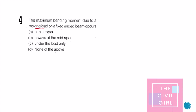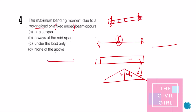Next question: the maximum bending moment due to a moving load on a fixed-end beam occurs due to what? For a fixed-end beam, there are already moments present at the fixed ends. If the moving load is placed near the support, additional moment is produced at the support, making it the location of maximum bending moment.